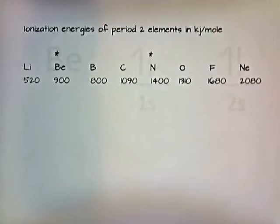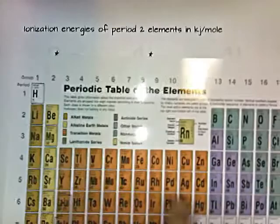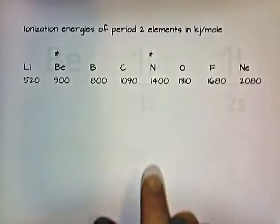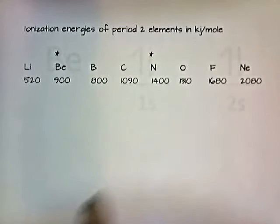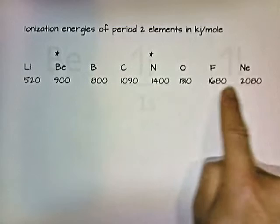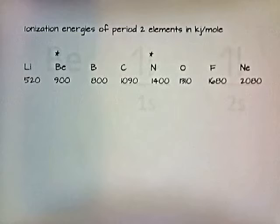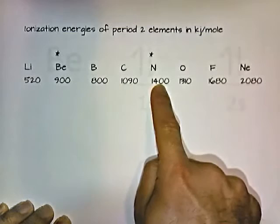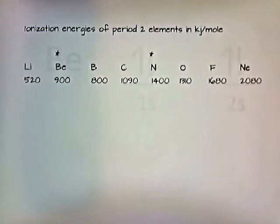Here are some ionization energies of the period 2 elements, which are in the second horizontal row on the periodic chart, listed in kilojoules per mole. A chart shows that the energy gradually increases as you go from left to right, but you should also notice that the energy occasionally decreases — it increases, then suddenly decreases, then increases again, and then suddenly decreases once more.